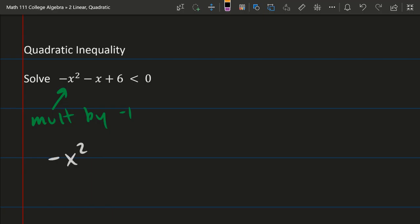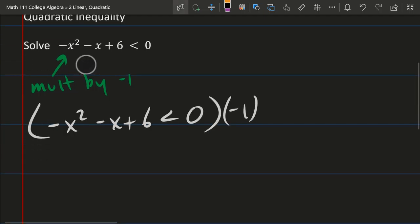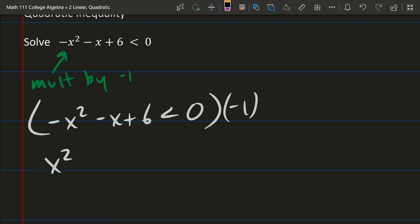Negative x squared minus x plus 6 less than 0, multiplying by negative 1 gives us positive x squared plus x minus 6. This flips the inequality, and of course 0 times anything will be 0.